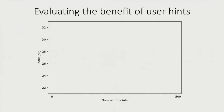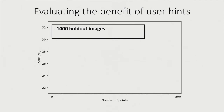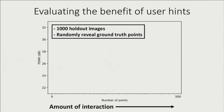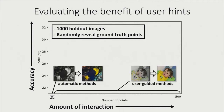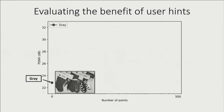Richard just presented a few encouraging visual results, but how well does the system work in general? We evaluate our method on holdout test images, randomly revealing ground truth points and seeing if the algorithm can reconstruct ground truth images. The x-axis shows the number of points as a measure of interaction. The y-axis reports quality measured by PSNR. A simple baseline that predicts gray for every pixel achieves about 23 PSNR.